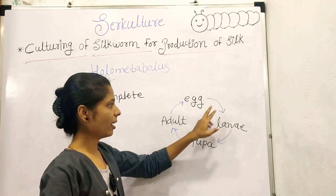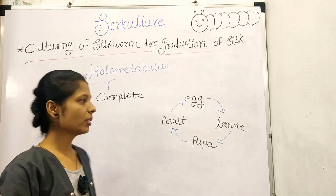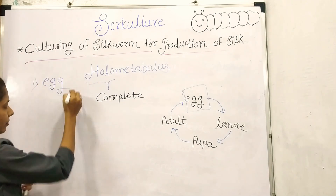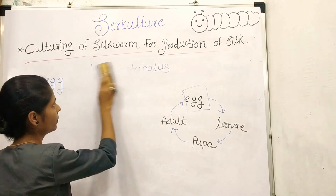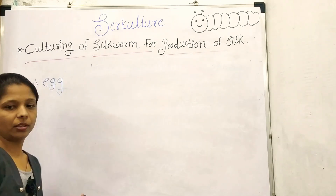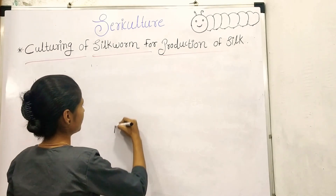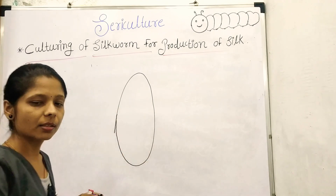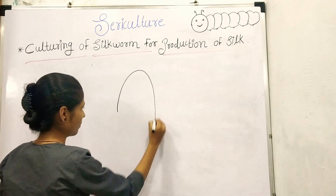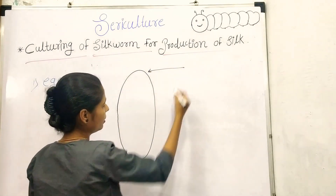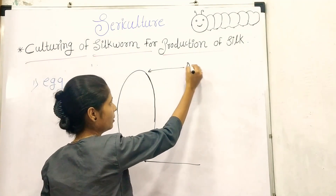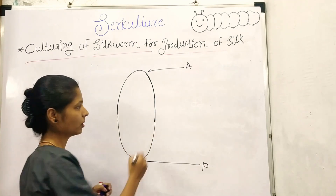We will first look at the structure of the egg. The egg is tiny and ovate or spherical in shape. The egg has two ends: the anterior end and the posterior end. The outermost covering of the egg is called the chorion.